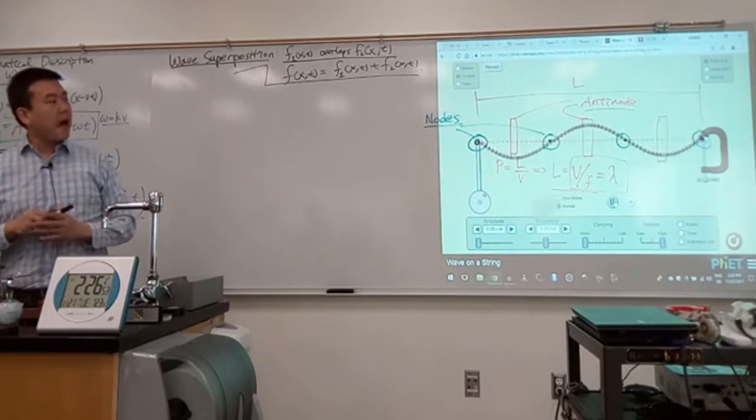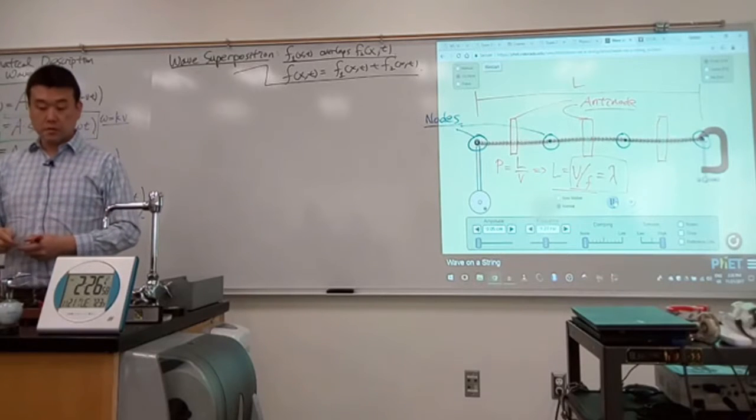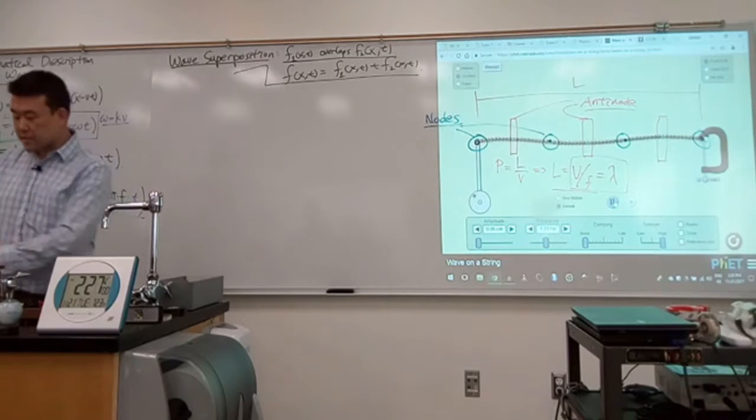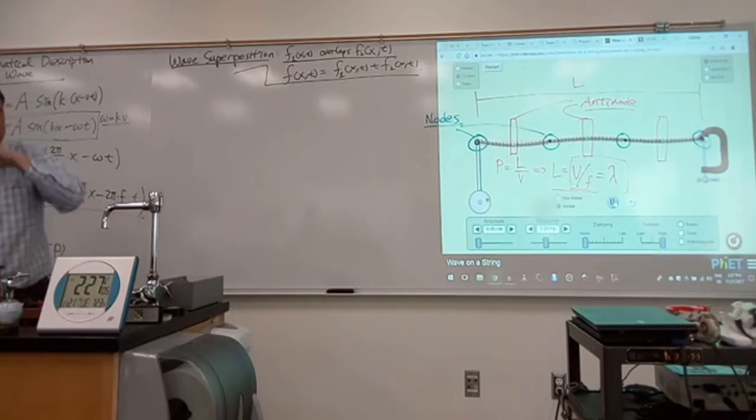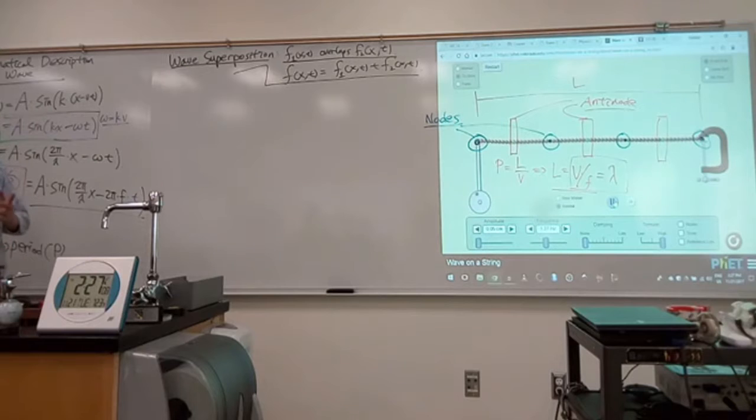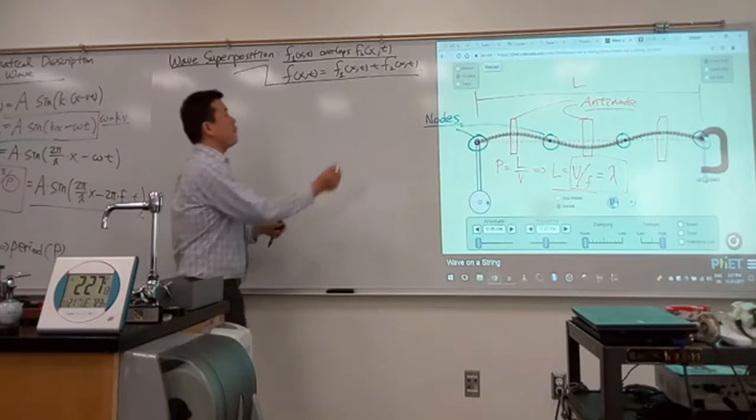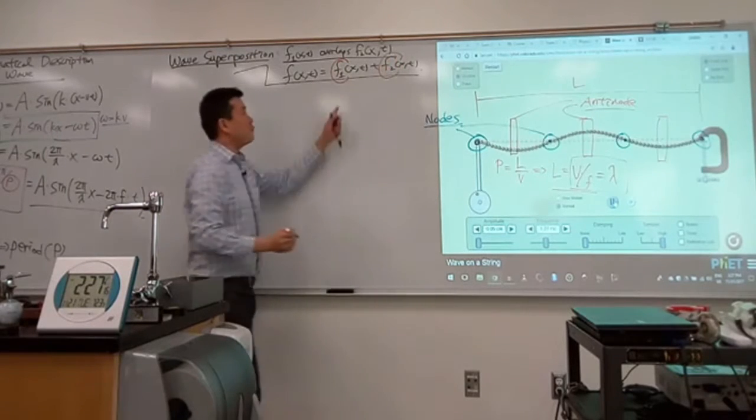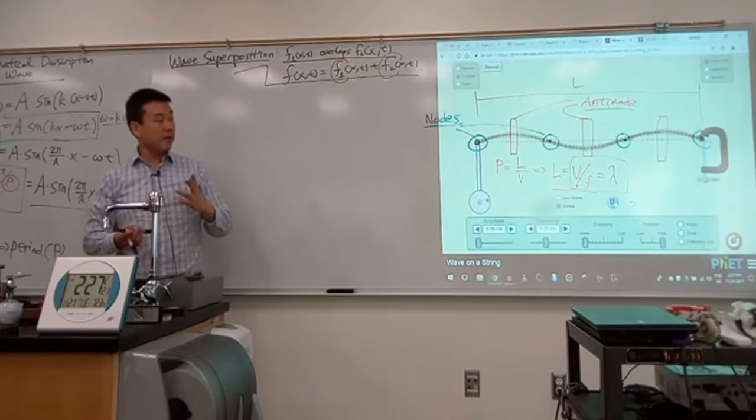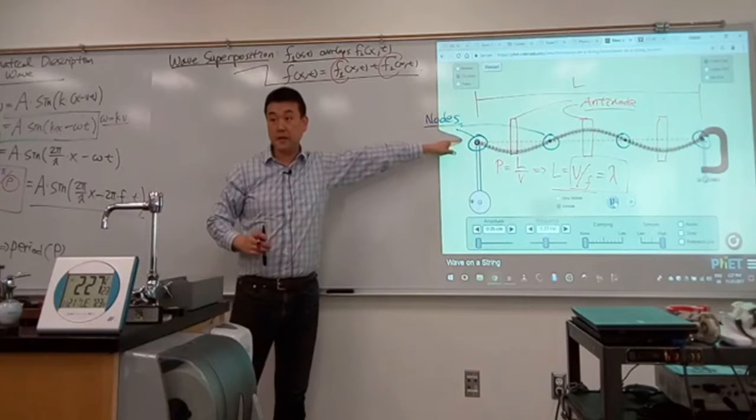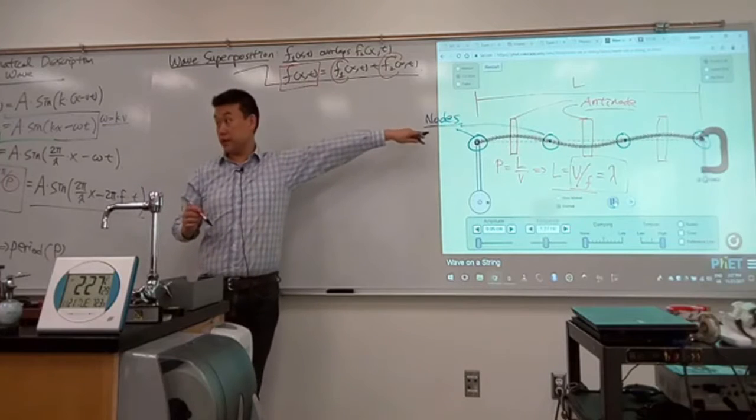Let's see how this kind of shape that you see happens. This is the mathematical derivation of how this standing wave happens. Let me describe the mathematical form of these functions F1 and F2. What I will show is that the resulting mathematical form naturally can be described as what you are seeing here. I'll get an expression for F that will look exactly like what you are seeing on the screen.